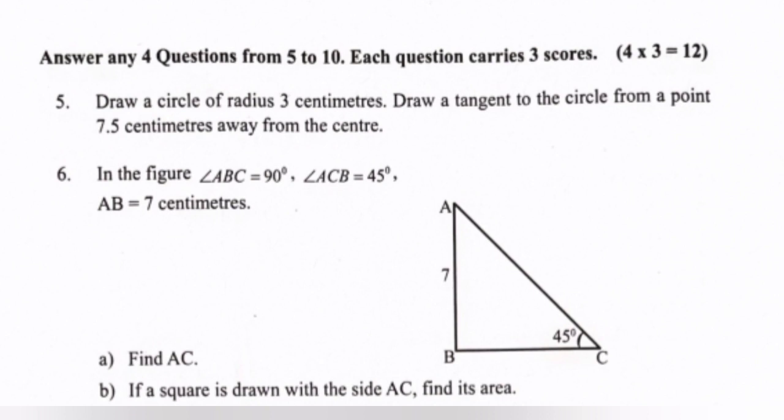Question 5: Draw a circle of radius 3 centimeters. Draw a tangent to the circle from a point 7.5 centimeters away from the center.